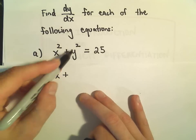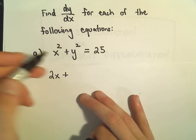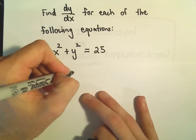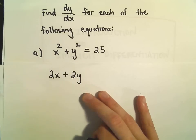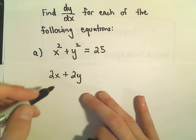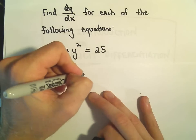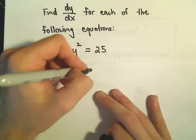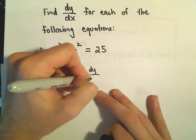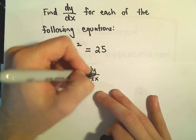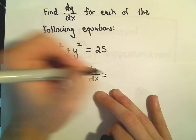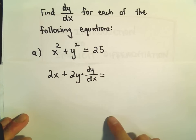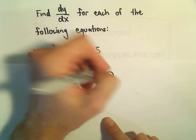Now we're going to take the derivative of y squared, and we do it again like normal — we get 2y. But what we have to do is anytime you take the derivative of something involving y, we have to multiply that by dy/dx. And on the right side, when we take the derivative with respect to x, we'll just get 0.